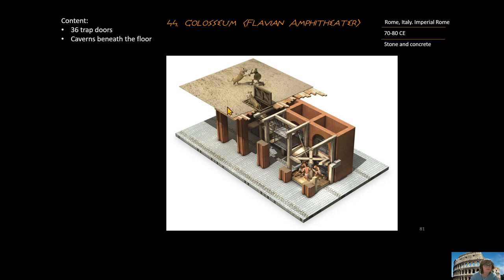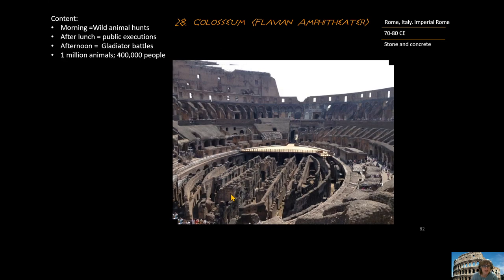The gladiators and fighters fought animals on the floor of the Colosseum. If the fighting got uninteresting, they could open a trap door and up would pop another animal from the caverns below the floor. Those caverns held animals from all over the Mediterranean world — alligators, ostriches, hippopotami. Sometimes the games could last a hundred days. The morning was filled with simulated animal hunts, replicating what it would be like to hunt in the animal's own environment.